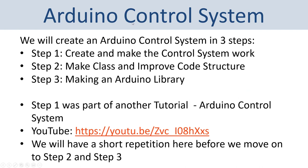We will create this Arduino control system and the Arduino control library in three steps. Step one: create and make the control system work. Step two: improve the code structure, make a class, improve the functions using local variables instead of global variables. Step three: make the Arduino library. Step one has already been covered in another tutorial called Arduino Control System, available on YouTube, and we will have a short repetition of it here.